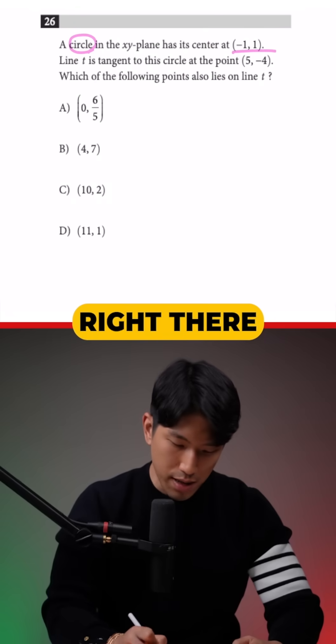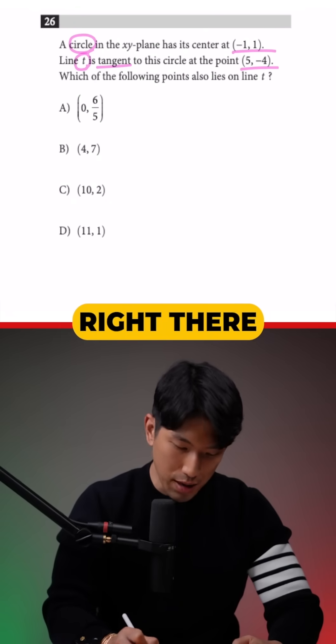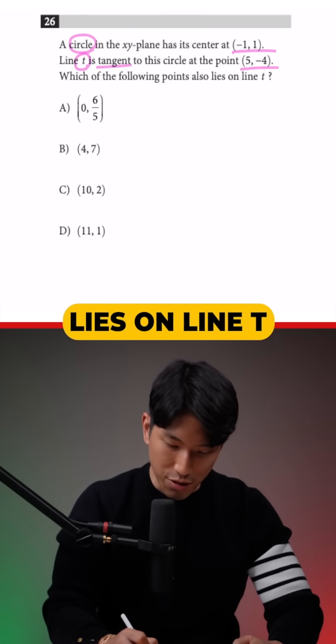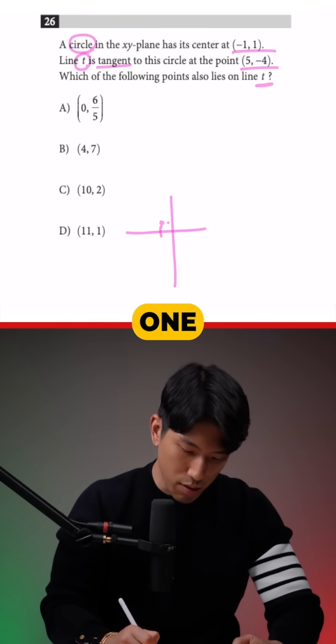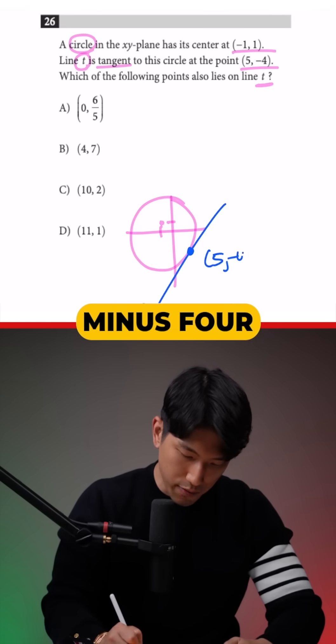A circle on the XY plane has center at right there, and we also have a line T that is tangent to the circle at a point right there. Which of the following also lies on line T? We have a center at minus one, positive one, and there's a line T that is tangent to the circle at coordinate five, minus four.